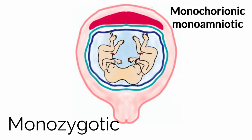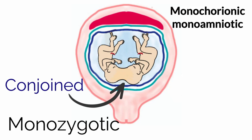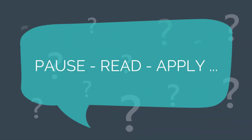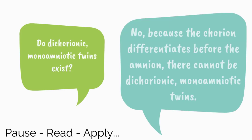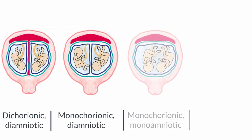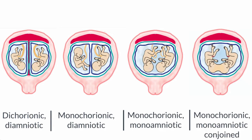A split that occurs on day 13 or later, after the embryonic disc has formed, results in monochorionic-monoamniotic twins that are conjoined or share body parts. Craniopagus twins, in which skulls are fused, is shown; conjoined twins are more commonly conjoined at the thorax. Do dichorionic-monoamniotic twins exist? No — because the chorion differentiates before the amnion, there cannot be dichorionic-monoamniotic twins. With the general principle that structures differentiated by the time of the split are shared, and structures not yet differentiated are separate, let's see how each monozygotic-twin combination arises.